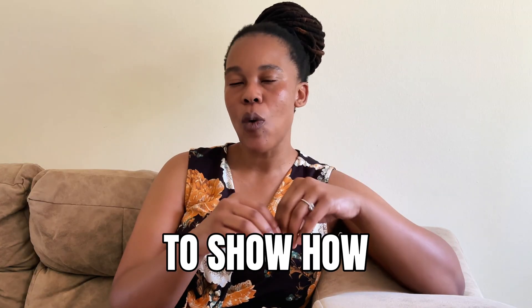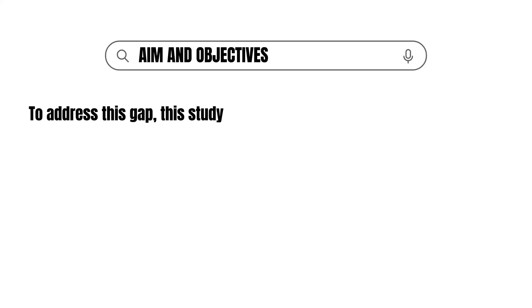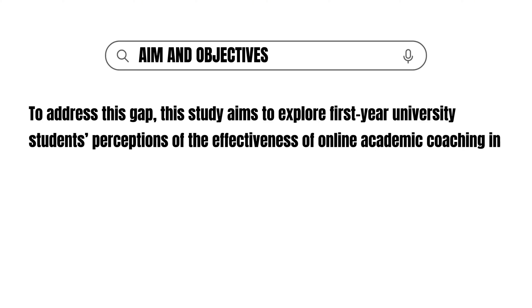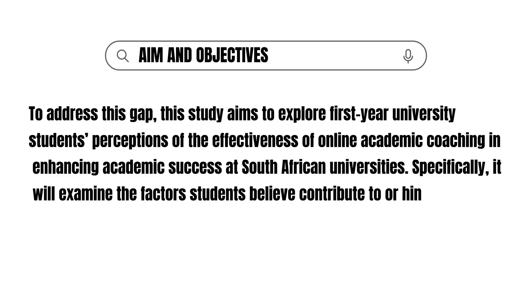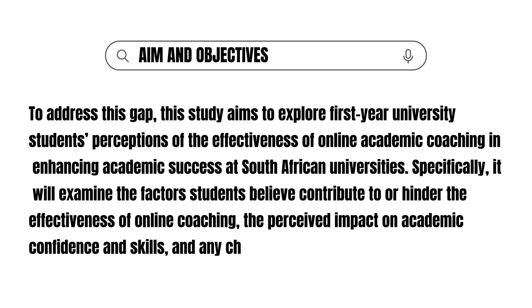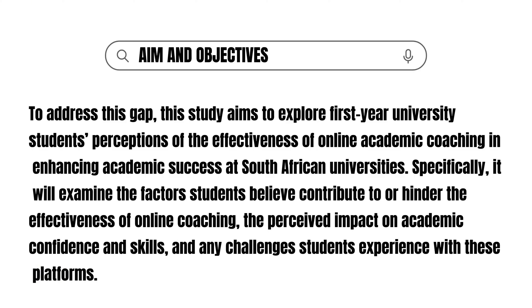The final part of the background is to introduce your aims and objectives, formulated in the previous video. This shows how the research will address the problem outlined and helps transition to the literature review. For example: 'To address this gap, this study aims to explore first-year university students' perceptions of the effectiveness of online academic coaching in enhancing academic success at South African universities. Specifically, it will examine factors students believe contribute to or hinder the effectiveness of online coaching, the perceived impact on academic confidence and skills, and any challenges students experience on these platforms.'